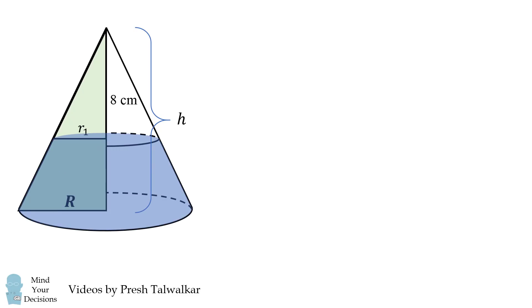Now let's determine the volume of water. This will be the difference in volume of the large cone and the small cone. So this will be pi over 3 r squared h minus pi over 3 r1 squared times 8.